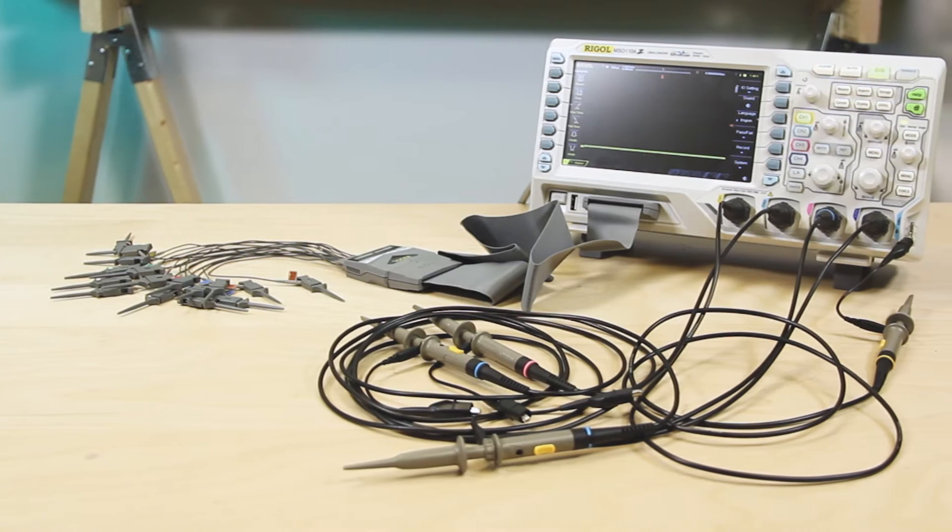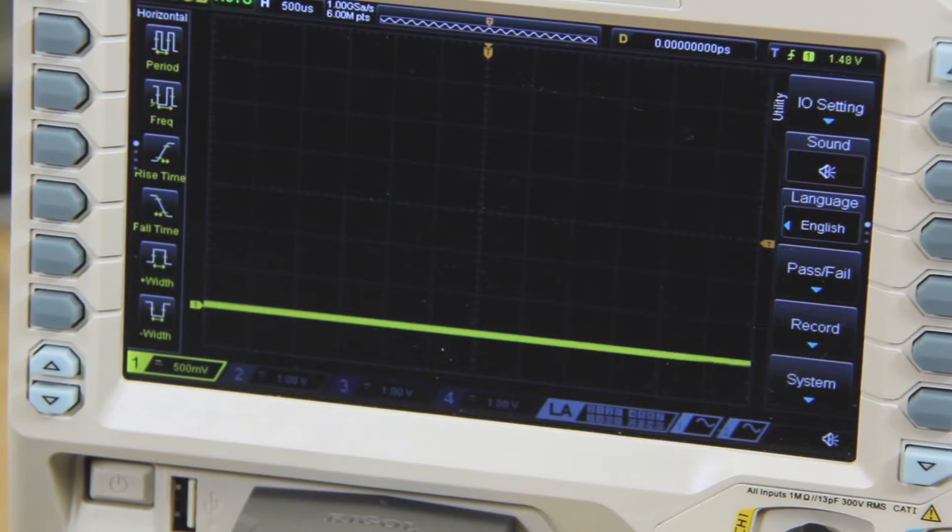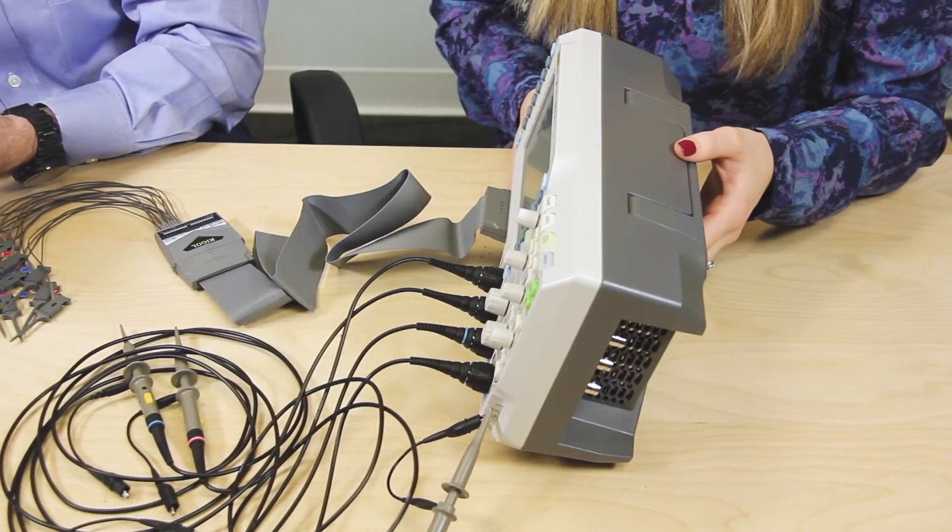Today we've got a mixed signal oscilloscope from Rigol called the MSO1104Z-S. It's got a color display spanning a 7-inch diagonal, and as you may be able to see, the scope is pretty compact.